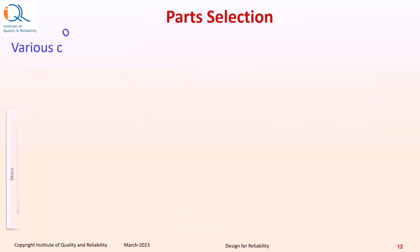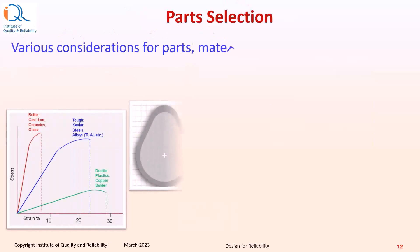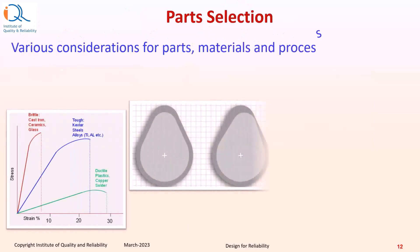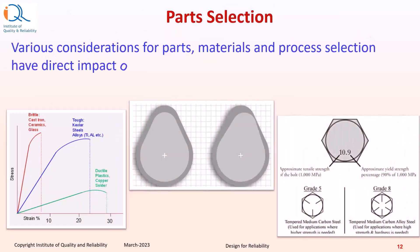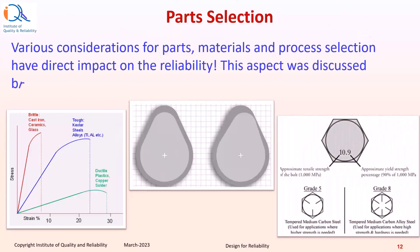Various considerations for parts, materials, and process selection have a direct impact on reliability of products. This aspect was discussed briefly in the video on this subject with examples.